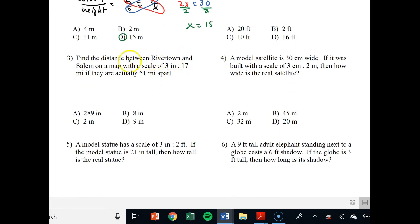It says find the distance between Rivertown and Salem on a map if it's three inches to 17 miles, if they're actually 51 miles apart. What am I comparing? I'm comparing inches and miles. That very first ratio is three to 17. So three over 17. And the next ratio says 51 miles. So miles needs to go on the bottom. So X over 51. I just cross multiply to solve. I have 17X is equal to 153. Same thing as dividing by 17. And then X is equal to 9 inches. So D.